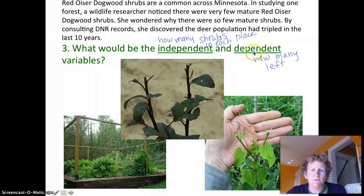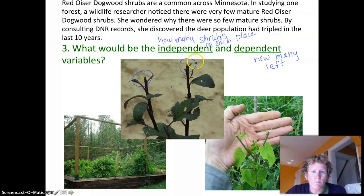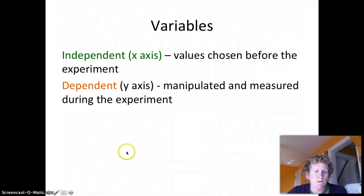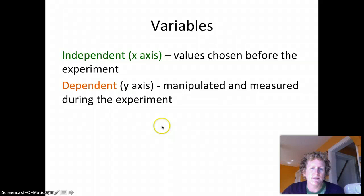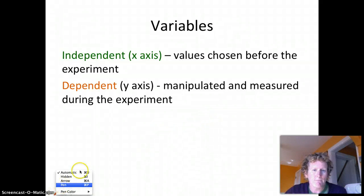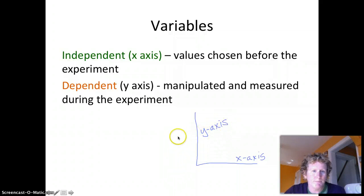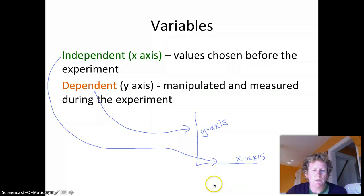The dependent variable depends on what happens in the experiment. This is what it looks like when deer bite shrubs — instead of just counting the number of shrubs, we could also count the bite marks on shrubs. When you make a graph, the independent variable goes on the x-axis (horizontal) and the dependent variable goes on the y-axis (vertical).